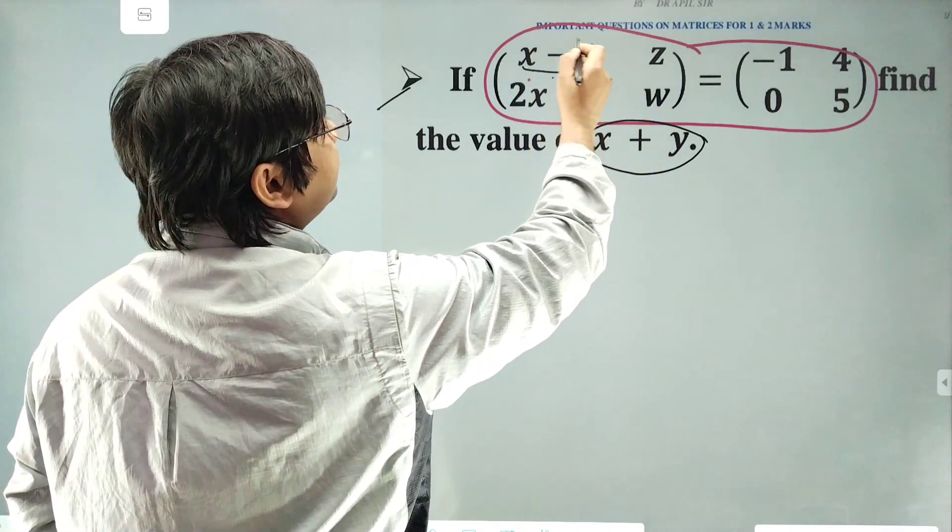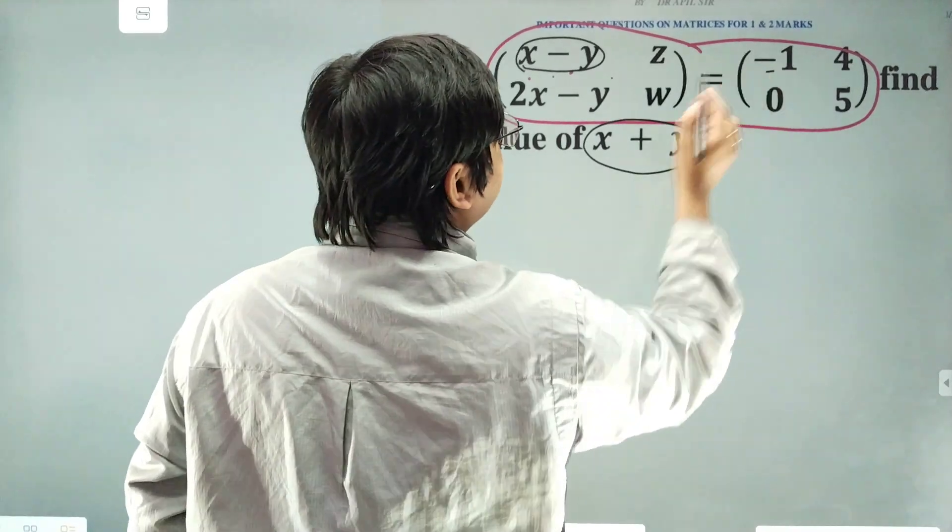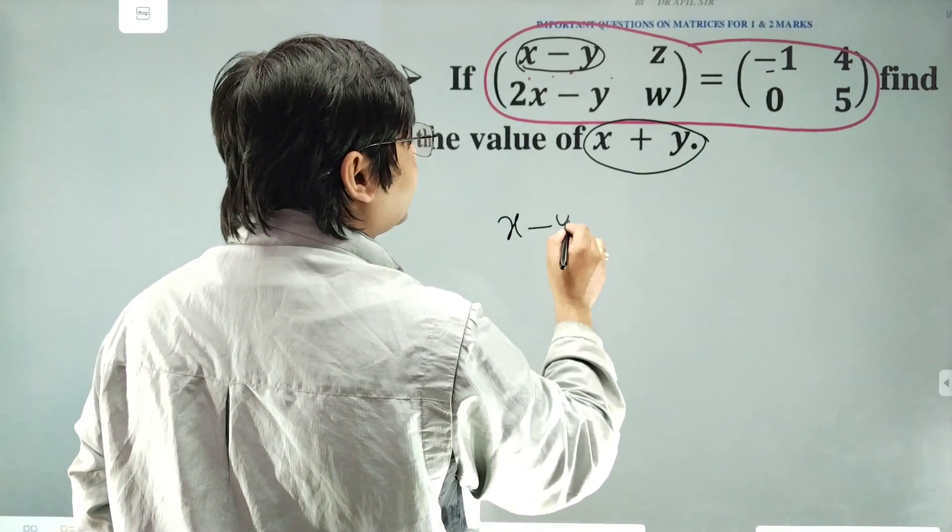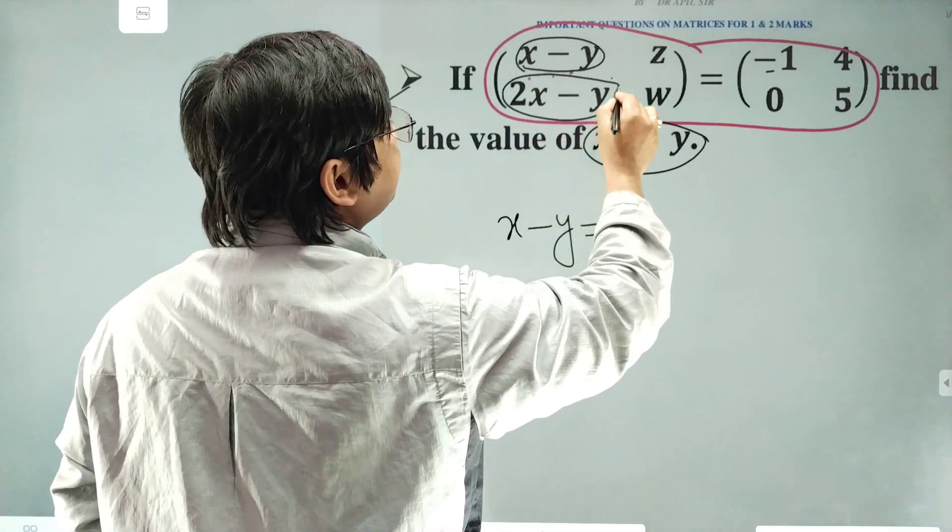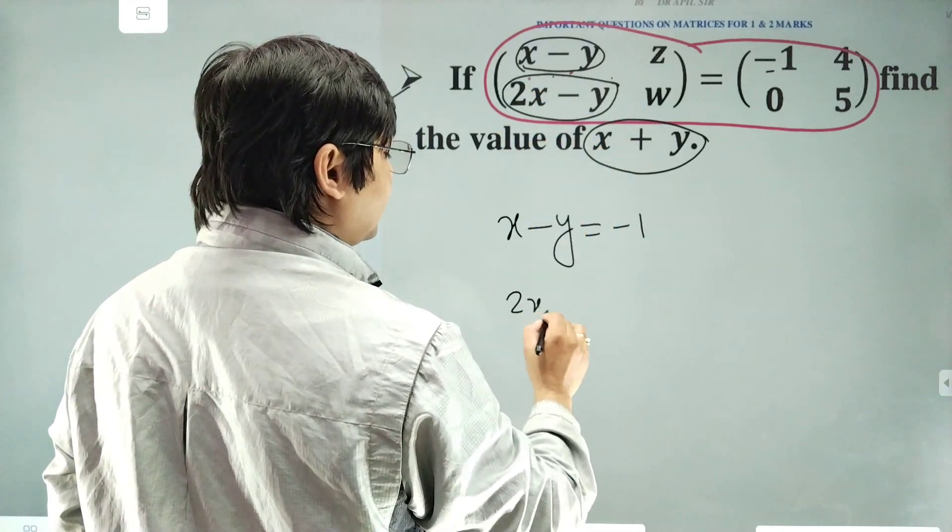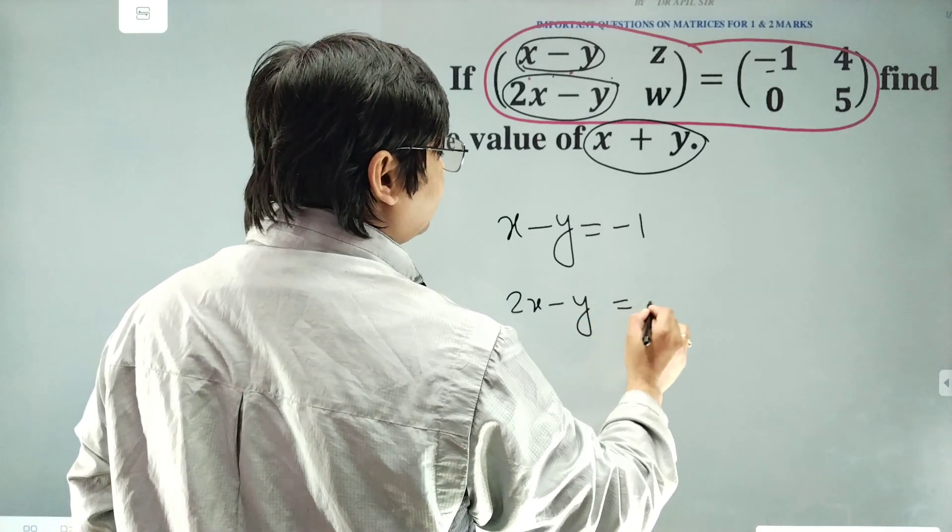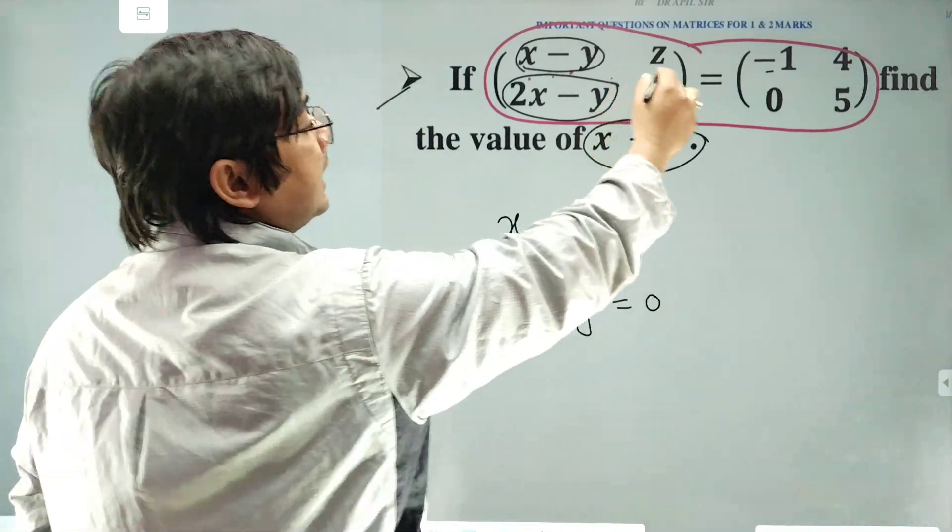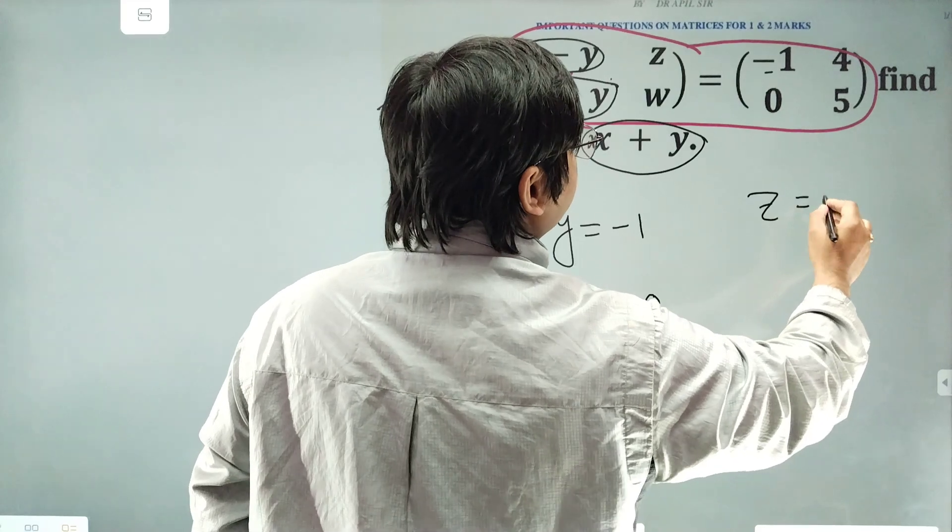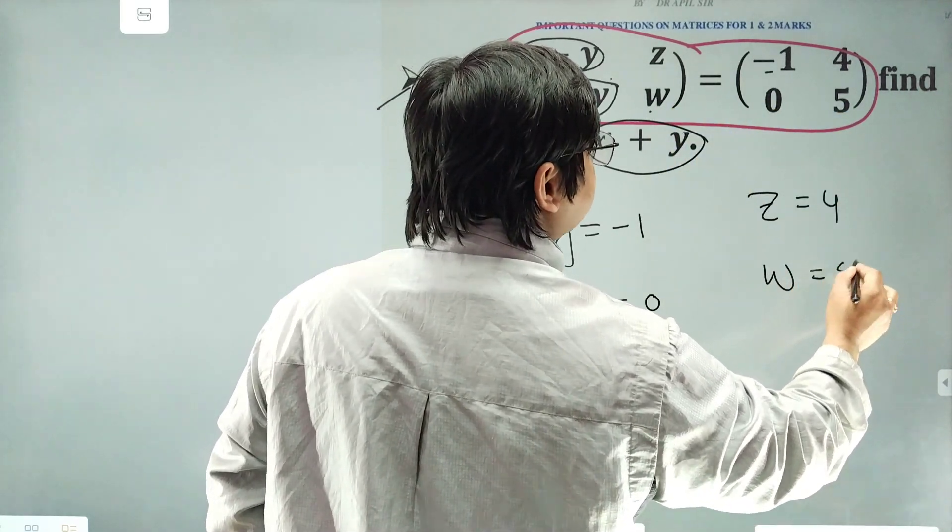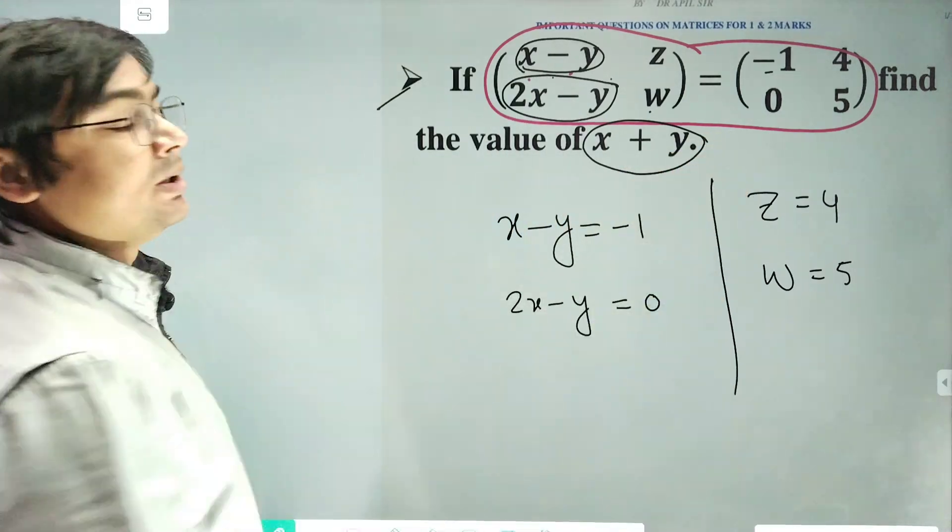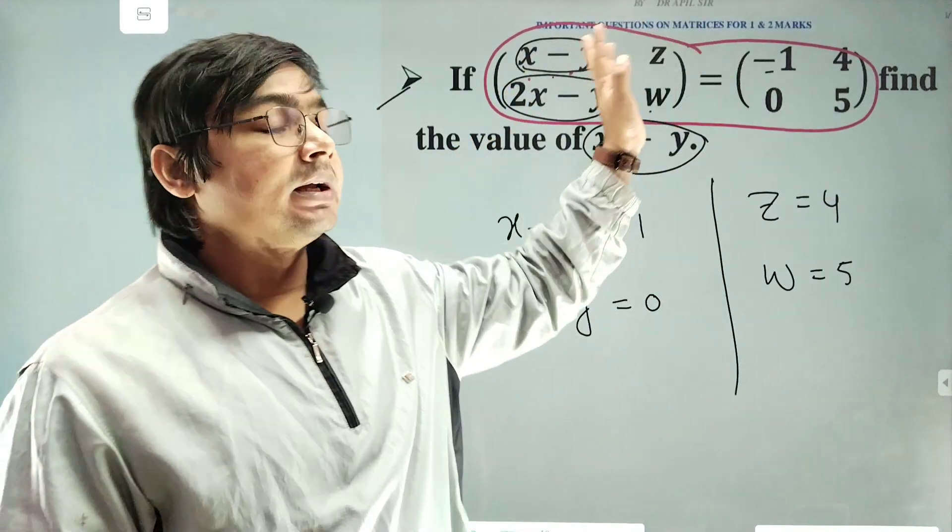Here, x plus x minus y will be minus 1, so from this, x minus y will be minus 1. And here, 2x minus y, twice of x minus y, will be 0. And z will be 4 and w will be 5. So from this, if we take the corresponding elements are equal, then you will get this.